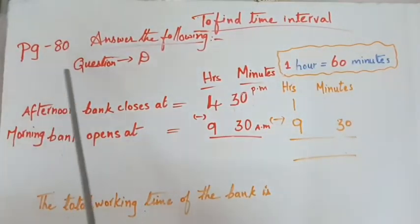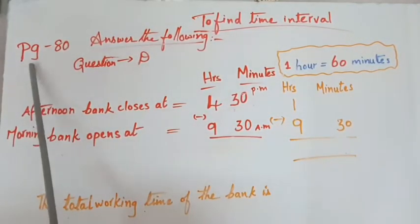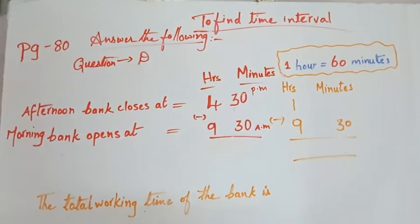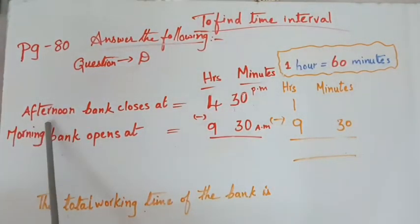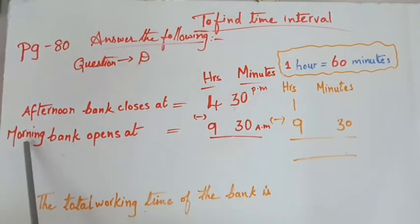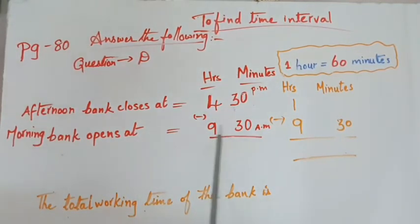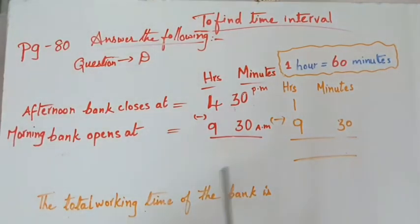Here, question number D, page number 80 of your math textbook. Just look at this question. A bank works from morning 9:30 a.m. to 4:30 p.m. Now our question is, what is the working time of the bank? So we have to write: afternoon bank closes at 4:30 p.m., morning bank opens at 9:30 a.m.